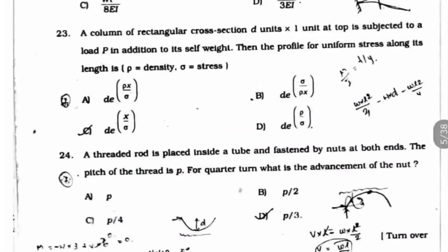Question 23: A column of rectangular cross section D units by 1 unit at top is subjected to a load P in addition to its self weight. The profile for uniform stress along its length is what? The answer is D times e to the power rho X by sigma.